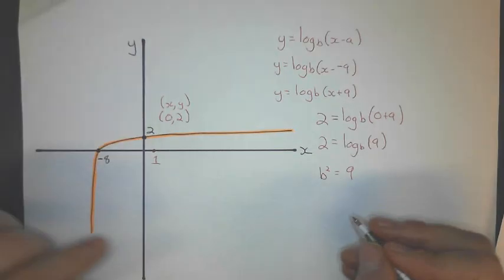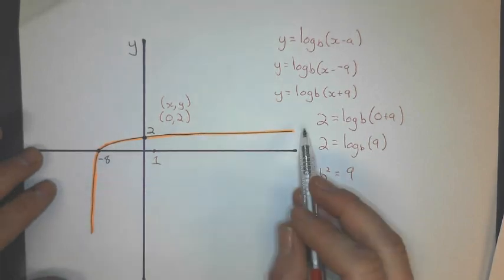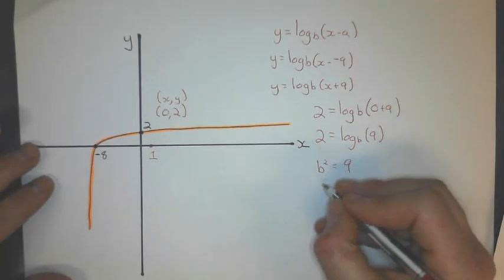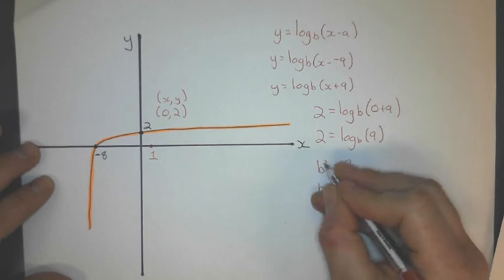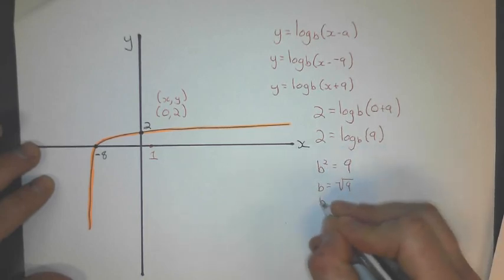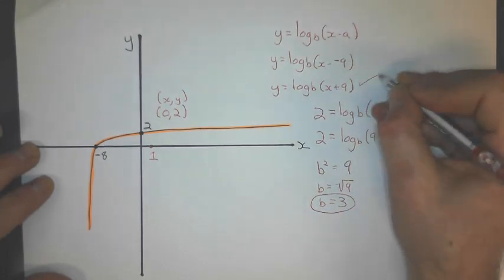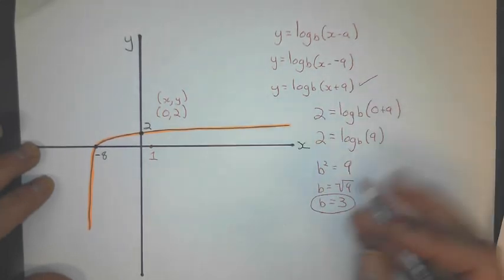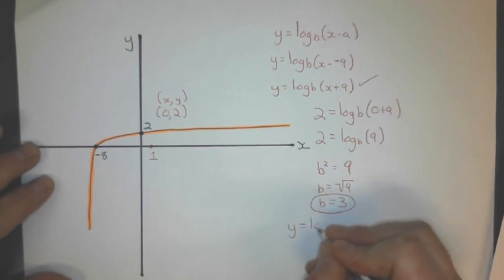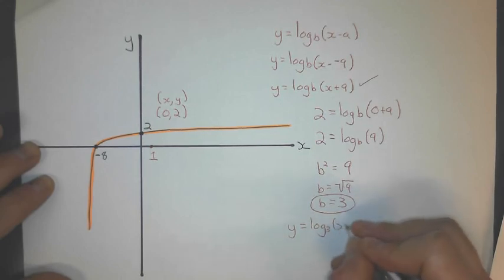Write that in index form, which means b squared equals 9. And this is an increasing function, so b is going to be positive. b equals the square root, which is the opposite of squared, 9, which gives me 3. Now I rewrite the general equation, which is that guy right there. And my equation is y equals log of base 3, x plus 9.